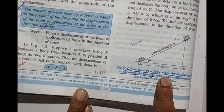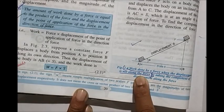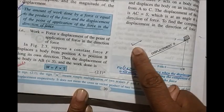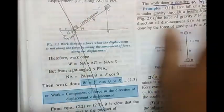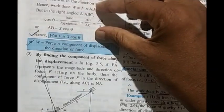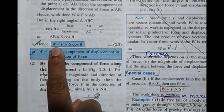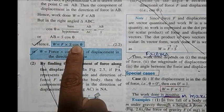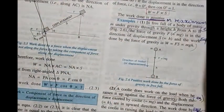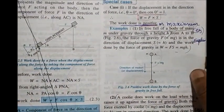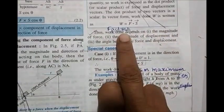Next is the derivation: work done by a force when displacement is not along the force. We draw the diagram and show the derivation. The conclusion is that the work done formula becomes W = F × s × cosθ. This part I told you to cut.